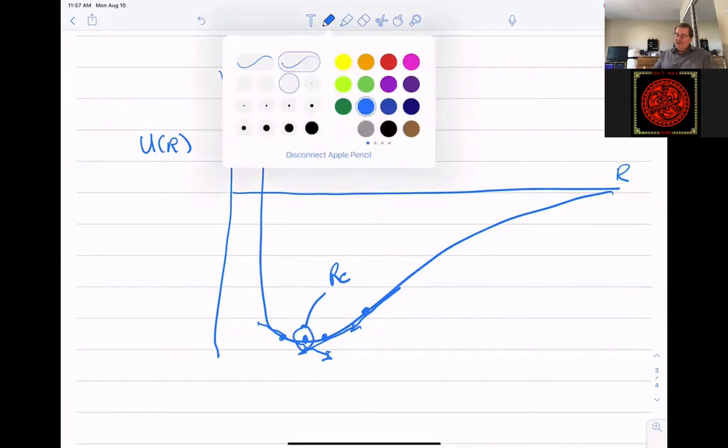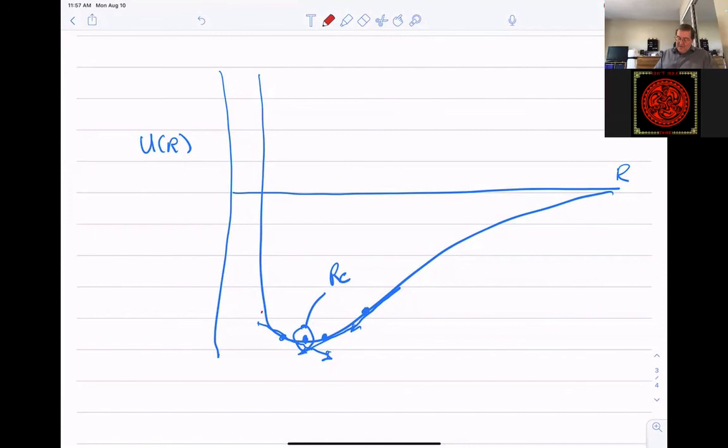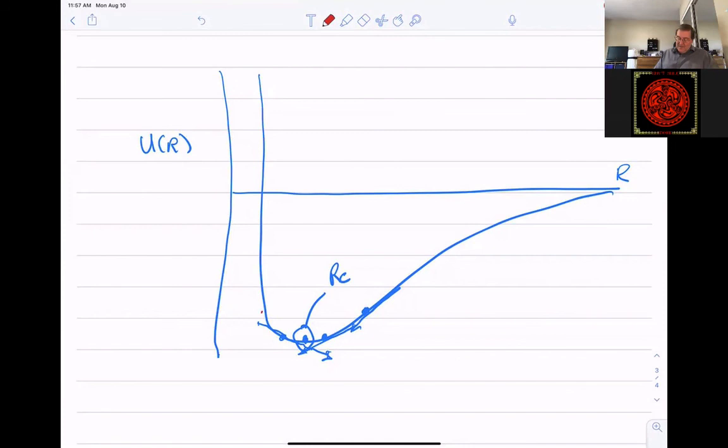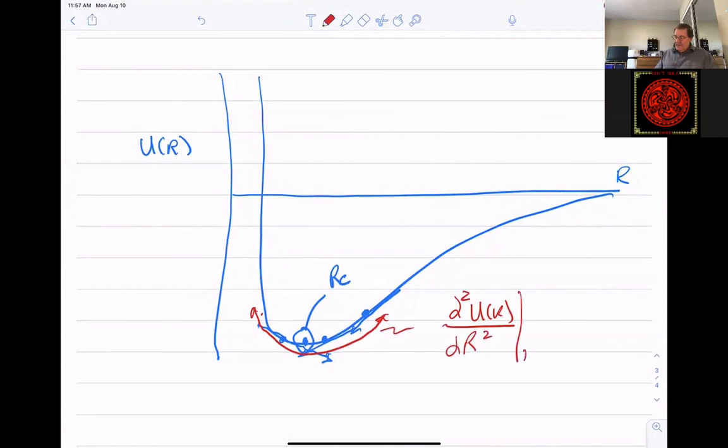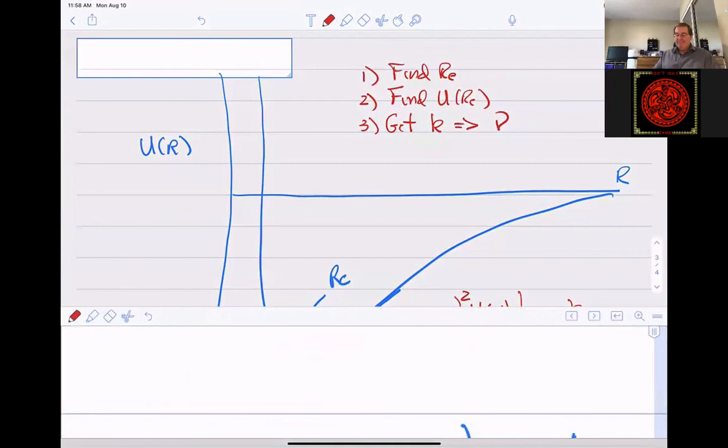Once it gets here, it says, well you wanted vibrational frequencies. So I don't need to just know the minimum. I need to know the second derivative of the potential with respect to that motion. So it's going to calculate the second derivative of U of R with respect to R at this R sub E you've located. It's going to set that equal to K, the force constant. It's going to calculate vibrational frequencies. So in an opt plus frequency, you will find R sub E, you will find U at R sub E, and you will get K, which gives you frequency. And that's all I got.